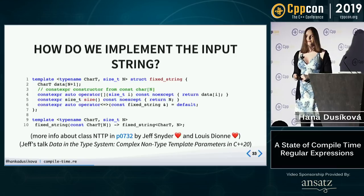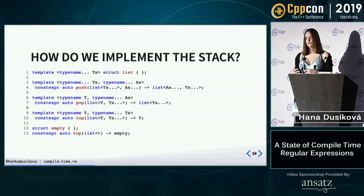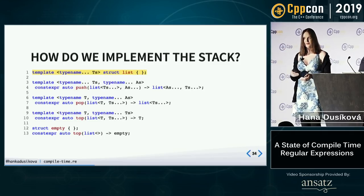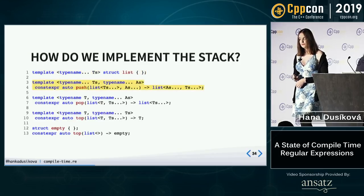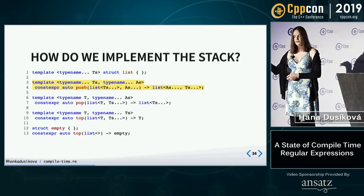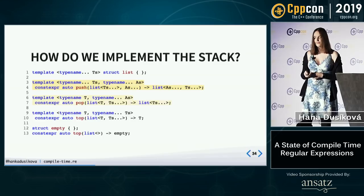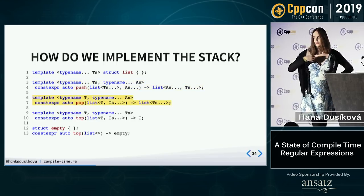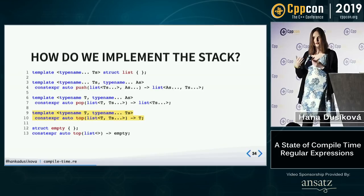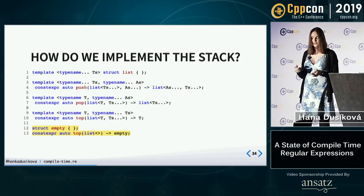The stack for parsing is implemented as another type — a template struct list which takes type arguments. Function push is an empty function which takes the stack and a string of symbols and returns a new stack. It's functional programming, so you're not modifying the stack — you're creating a new one. If I'm popping something, I look at the first symbol T on the stack and return a stack without it. If I'm looking at the top of the stack, I look at the first symbol and return it. If the stack is empty, I return the special symbol 'empty'.